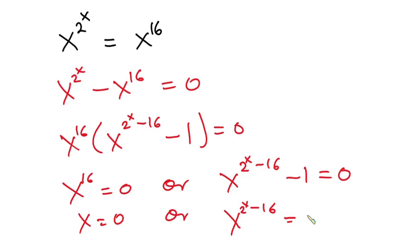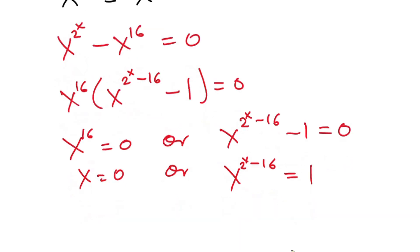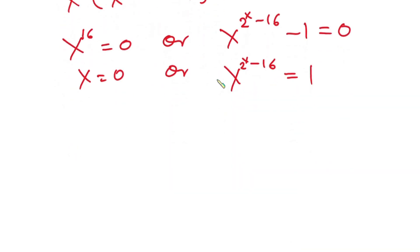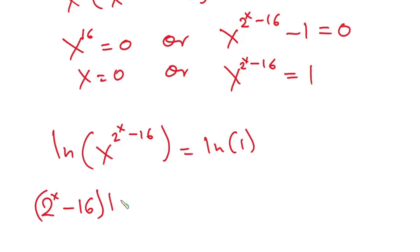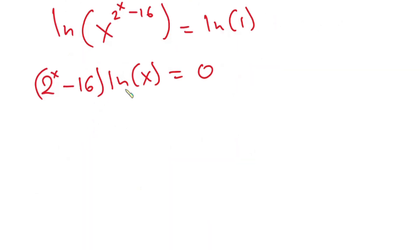Now for the second factor, x to the power (2 to the power x minus 16) is equal to 1. Taking the natural log on both sides, we get (2 to the power x minus 16) times the natural log of x is equal to the natural log of 1, which is zero.